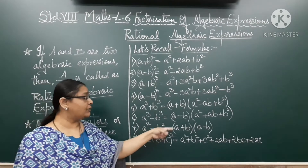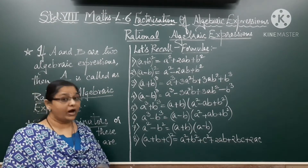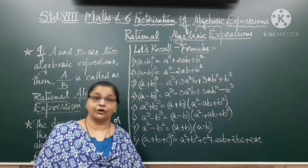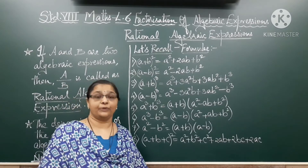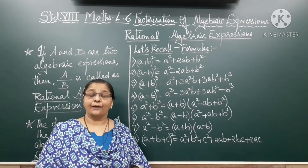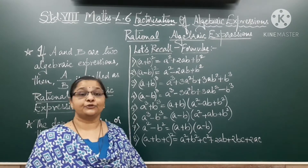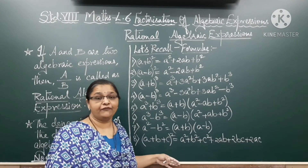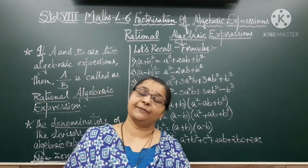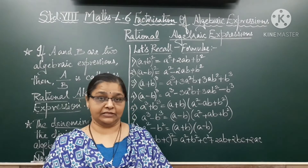You have also learnt A² - B² = (A + B)(A - B), and (A + B + C)² = A² + B² + C² + 2AB + 2BC + 2AC. So, you have learnt many algebraic formulae and their factors, and you have also factorized quadratic trinomials and various algebraic expressions.